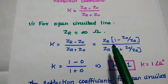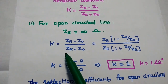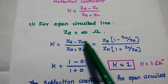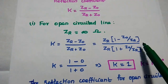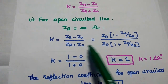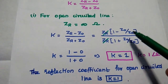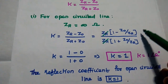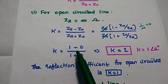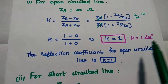We have to simplify the formula by taking ZR as a common factor from the numerator and denominator. The numerator becomes ZR times (1 minus Z0 divided by ZR), and the denominator becomes ZR times (1 plus Z0 by ZR). We then cancel ZR and substitute infinity: any value divided by infinity becomes 0. So K equals 1 minus 0 divided by 1 plus 0, giving K equal to 1 with angle 0 degrees.